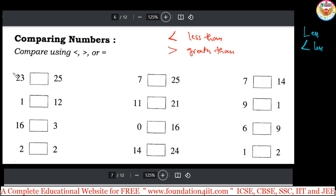If left side value is small, less than symbol, then you can use the less than because 23 is less than 25. 1 is less than 12. 16, left side is greater than right side number, so 16 is greater, greater than symbol. Both are equal, you can just keep the equal symbol. 7 is less than 25, 11 is less than 21, 0 is less than 16, 14 is less than 24. Left side's numbers are small. 7 and 14, 7 is less than 14. 9 and 1, so in the number line, 9 is right side, 1 is left side, but 9 is greater, so greater than symbol. 6 is less than 9, 1 is less than 2. You just fill that full page in that way.